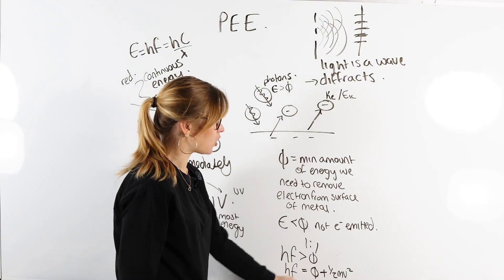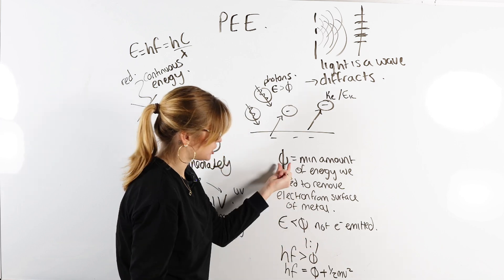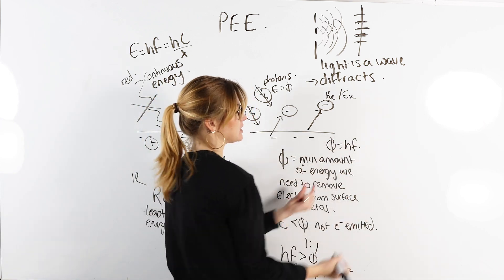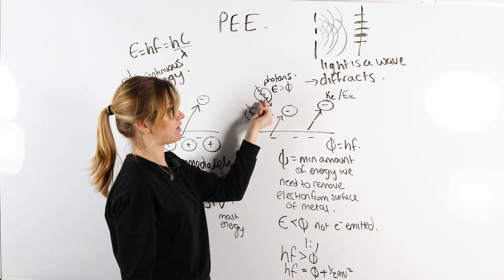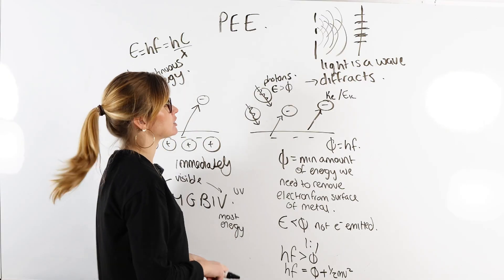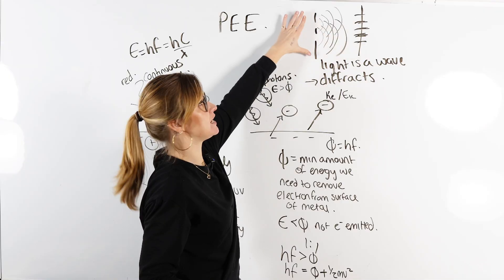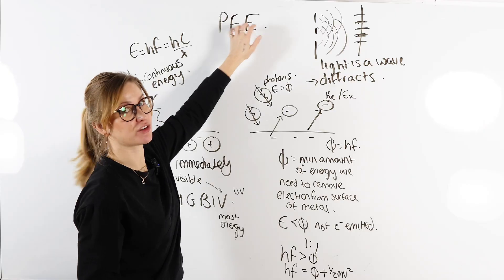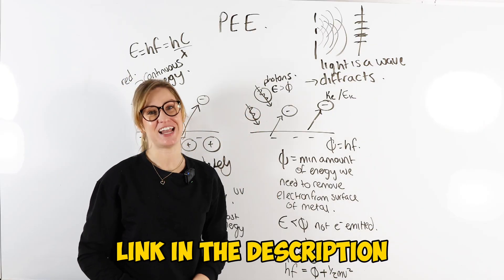This is also related to the threshold frequency. Because the work function is the minimum energy needed, you might see it written as H times F₀, where F₀ is the threshold frequency — the minimum frequency that light must have to get an electron emitted from the surface of the metal. That's how we figured out that light behaves both as a wave, due to the interference effect, and as a particle, from the photoelectric effect. Hopefully you found this video useful — click the link below to sign up to our lessons.